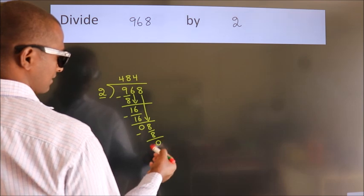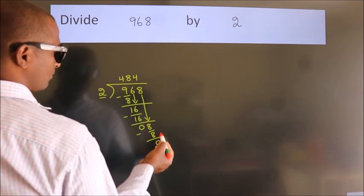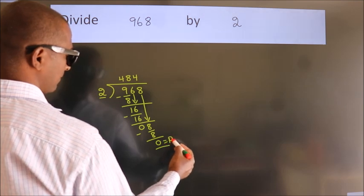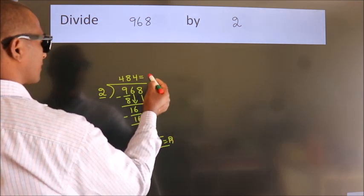After this, no more numbers to bring it down. So we stop here. This is our remainder. This is our quotient.